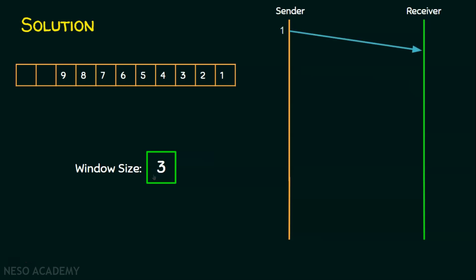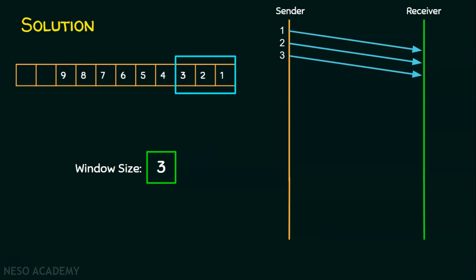The sender sends packet 1. The sliding window currently covers packet 1, but the sender can transmit 3 frames without expecting an acknowledgement because the window size is 3. So the sender sends packets 2 and 3. The receiver sends acknowledgement for packet 1. When that acknowledgement is received, the sender sends the next available packet, which is packet 4, and slides the window so it now covers packets 2, 3, and 4. The receiver then sends acknowledgement for packet 2.